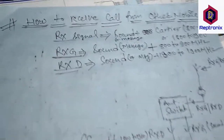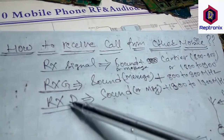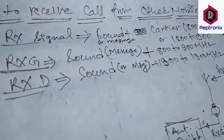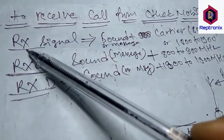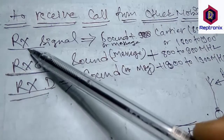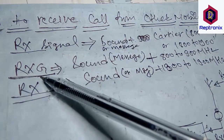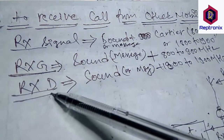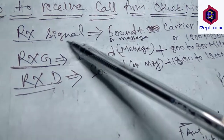For a minute, how do we receive call signals? What is the receiving signal and what is the transmitting signal? You can see the receiving signal is called the Rx signal. The Rx signal is of two types: one is GSM and the other is DCS. GSM is referred to as G and DCS is referred to as D.